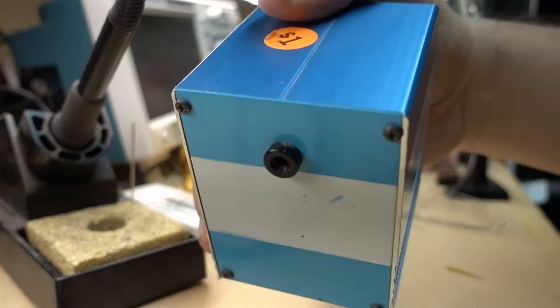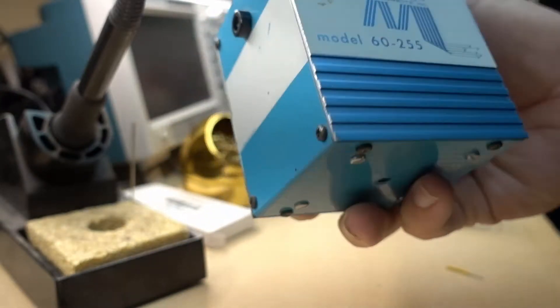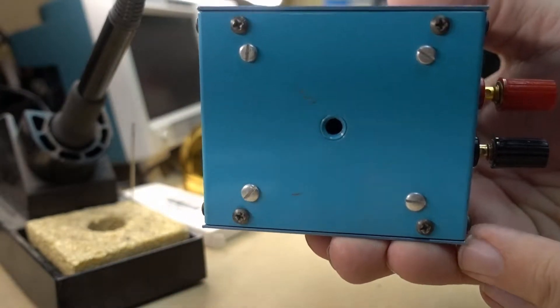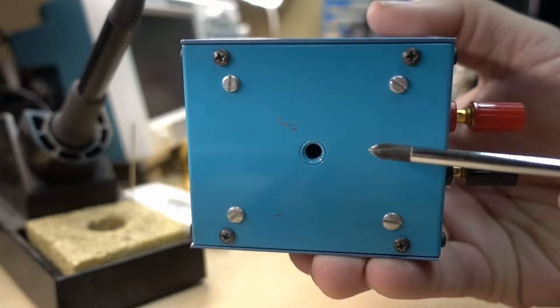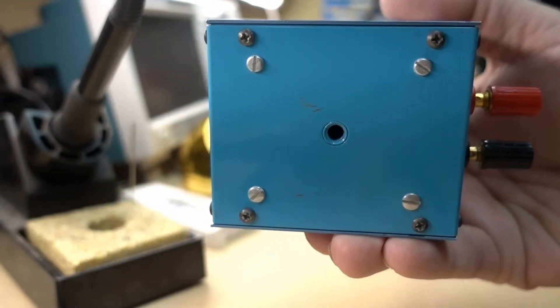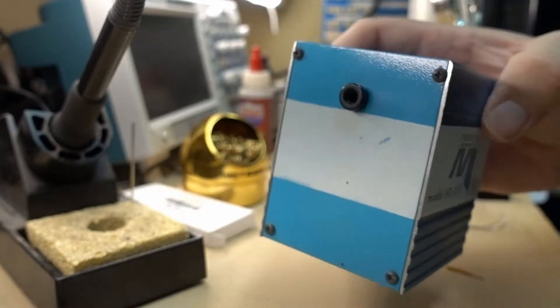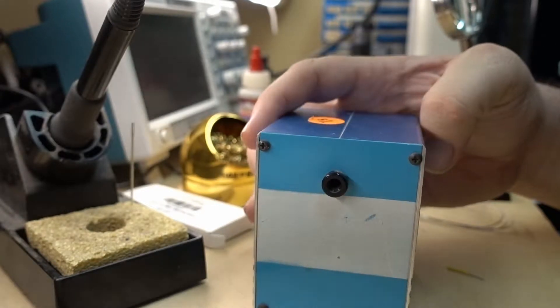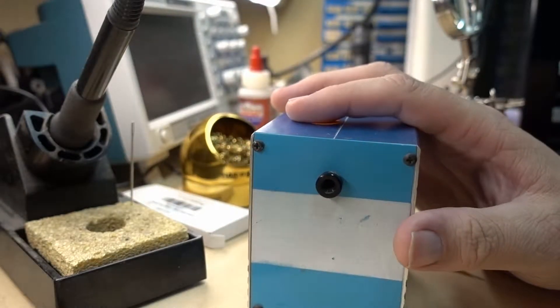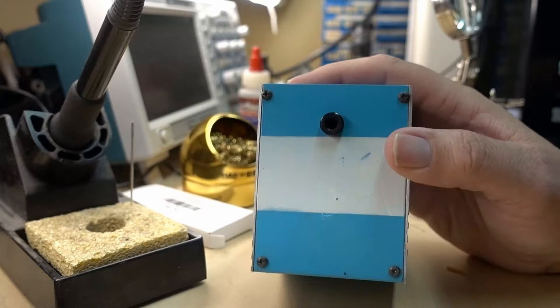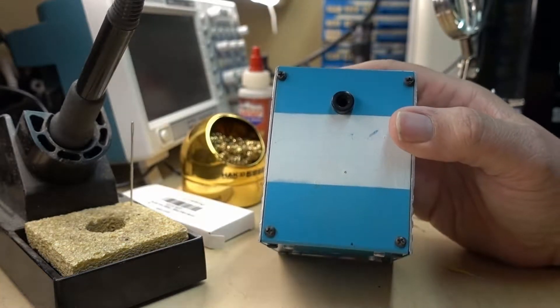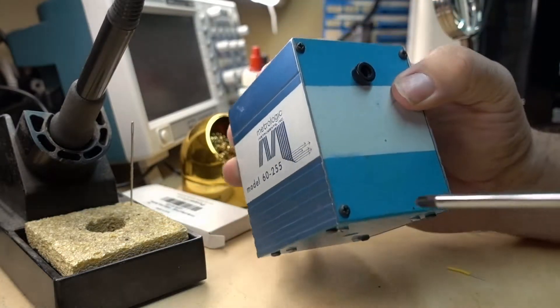In this case it's an example of a way to get a good quality extruded aluminum project box and a number of screws and connectors and switches. In this case it even has a mount for use on a tripod which I'll explain here in just a minute but this device is a Metrologic model 60-255.